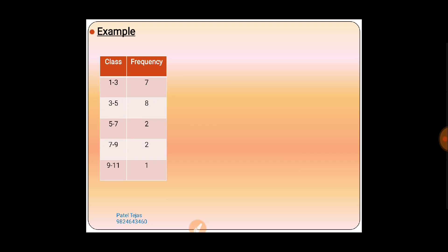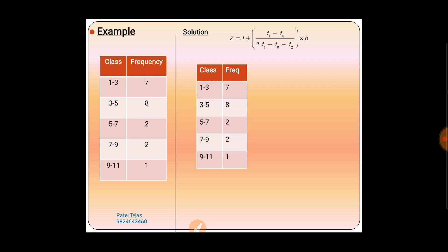Now let's solve an example. The class intervals are 1–3, 3–5, 5–7, 7–9, 9–11 with frequencies 7, 8, 2, 2, 1. The formula of mode is Z = l + [(f1 − f0) / (2f1 − f0 − f2)] × h. Mode is the only method where we don't need to add any new column, unlike mean where we had to find xi, di, etc. We just decide the modal class and solve directly.